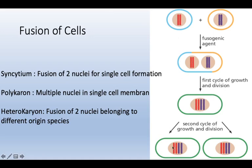We begin with two chromosomes labeled in red, and at the end there is a tetragenic nuclei formation, ending up with four chromosomes because the two blue and two red fuse together. This fusion is generally facilitated by Sendai virus or polyethylene glycol.